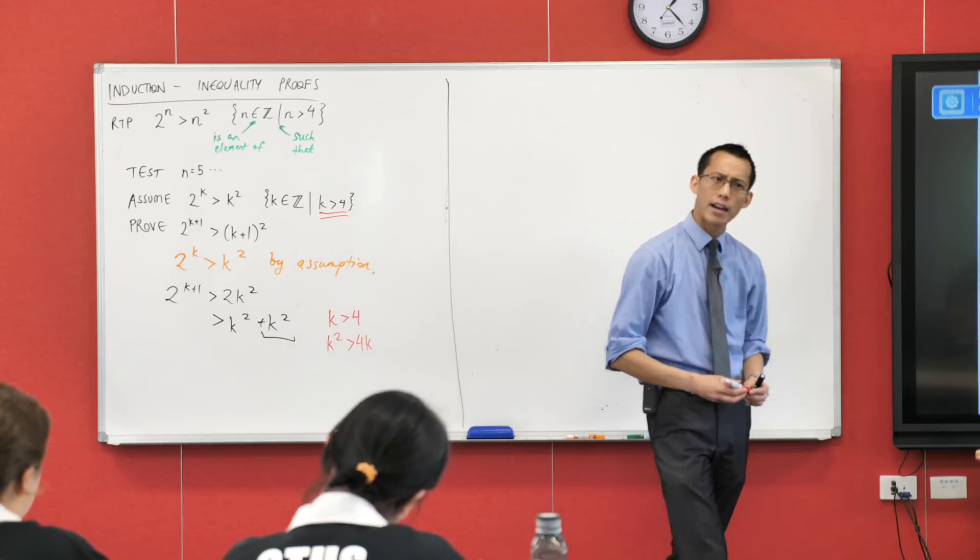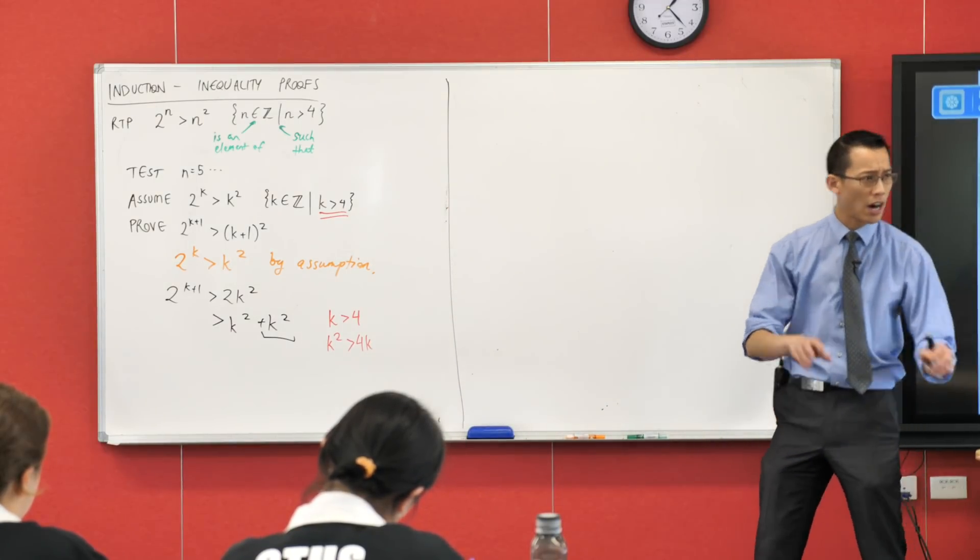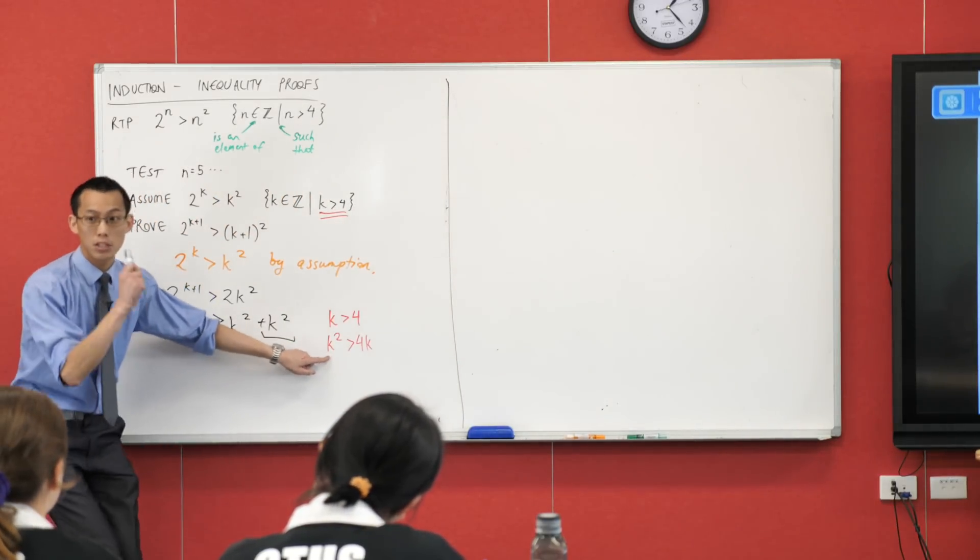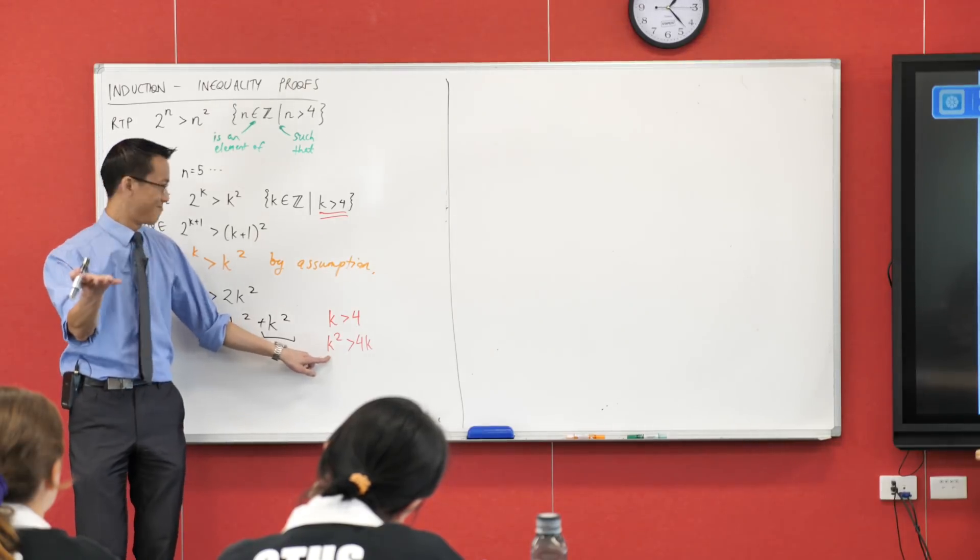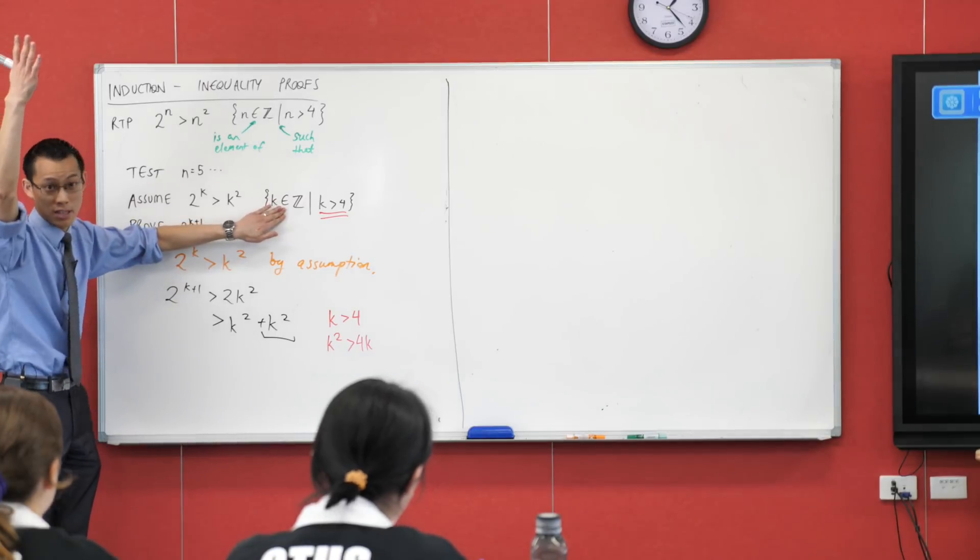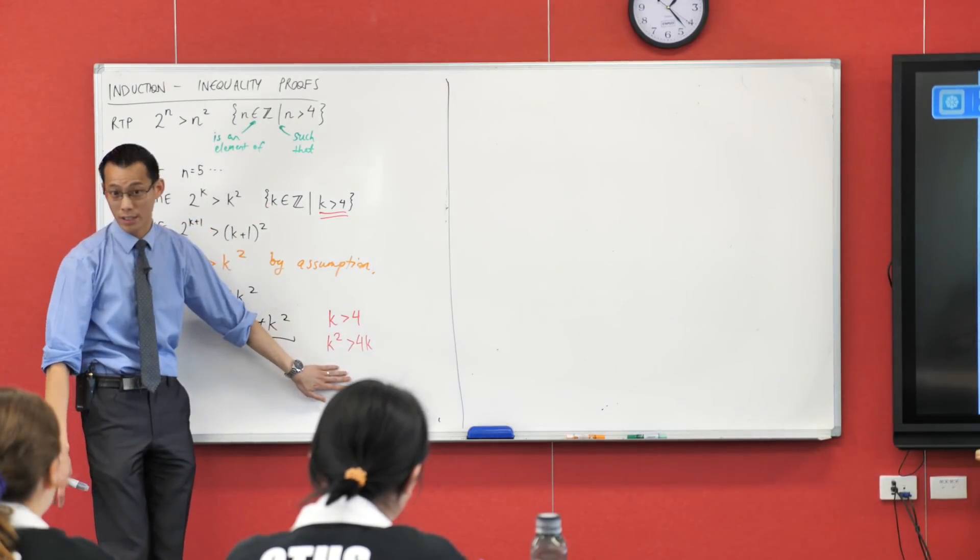By the way, why can I multiply by k? We've seen before, you can't do everything to inequalities you do with equations, but this is fine. Why can I multiply by k and everything's all right? Thank you. k is positive. It's an integer, but it's got to be bigger than zero, right? So, it doesn't break my inequality here, right?